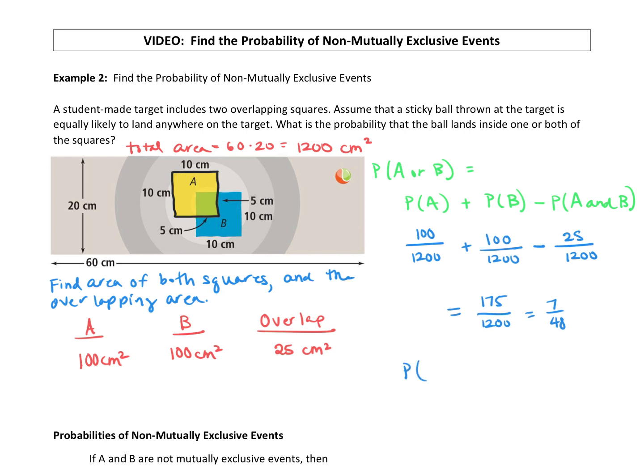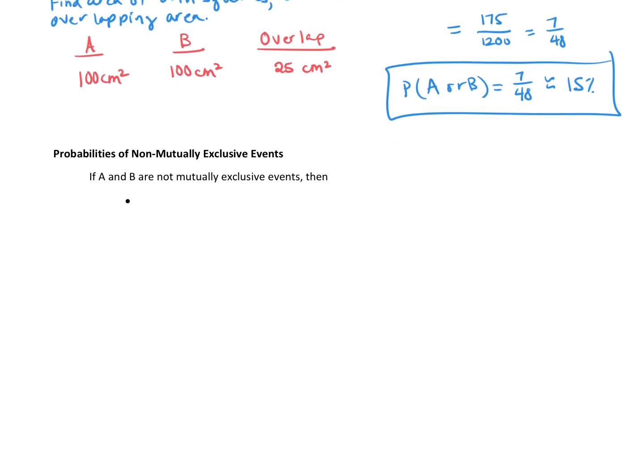The probability of it landing in A or B is 7/48ths, which is about equal to 15%. Similar to if your events are mutually exclusive, to find the probability of A or B, we just added the two events together. If your events are not mutually exclusive, you have to subtract out the overlap, because otherwise you counted it here and you counted it there. If A and B are not mutually exclusive events, then the probability of A or B happening is equal to the probability of A plus the probability of B minus the probability of A and B - that's that overlap.